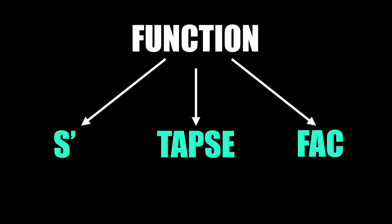This is the equivalent of doing an ejection fraction for the left heart. The ejection fraction doesn't work as well for the RV because of the shape of the RV — it's not a nice concentric cone. The RV is this weird kidney basin shape, so it's difficult to get a good ejection fraction, so we do these other things instead.